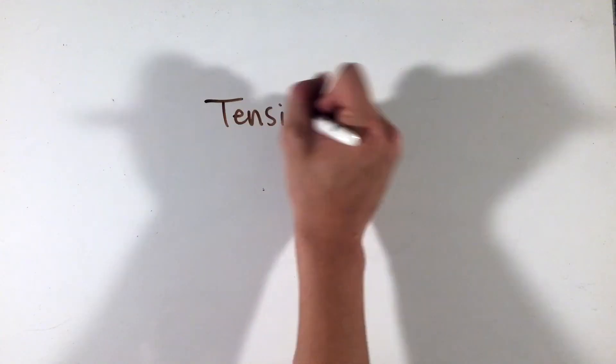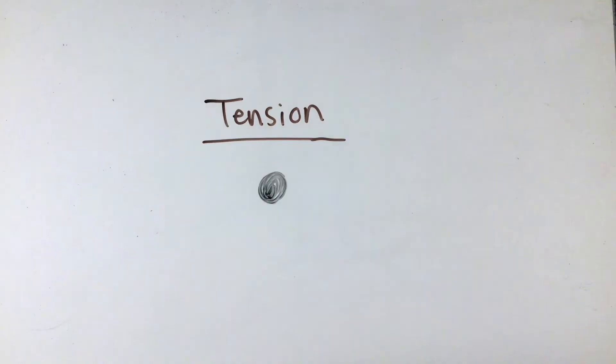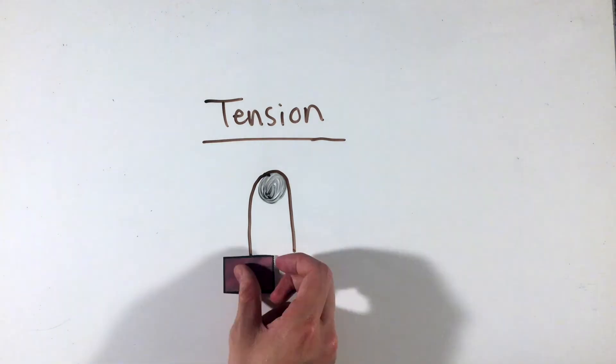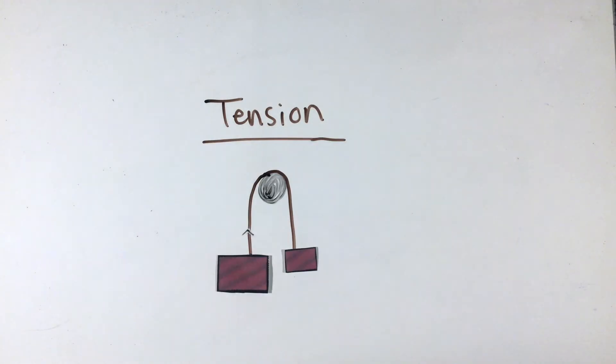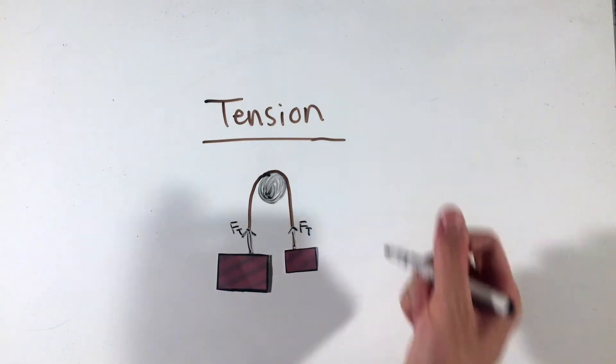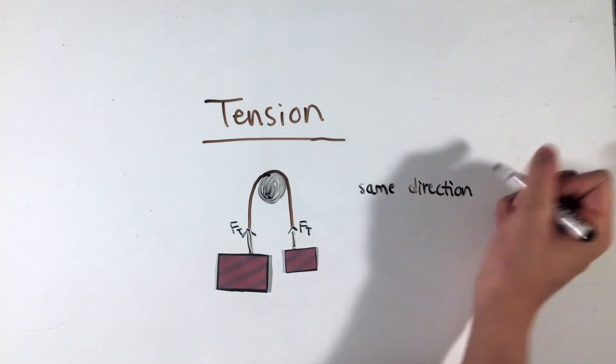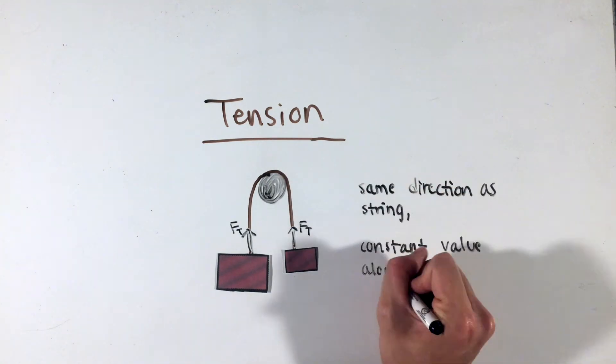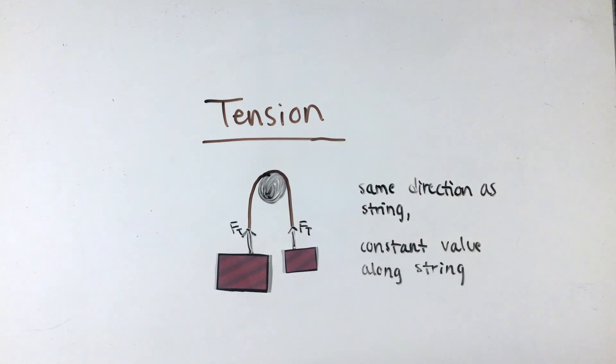When it comes to questions involving strings or pulleys, the most important force to remember is the force of tension, applied by a rope or string on the object. While this force is variable and doesn't have a corresponding equation, some important properties of tension are that it always acts in the same direction as the string applying it, and the tension along any single piece of string or rope must be constant.